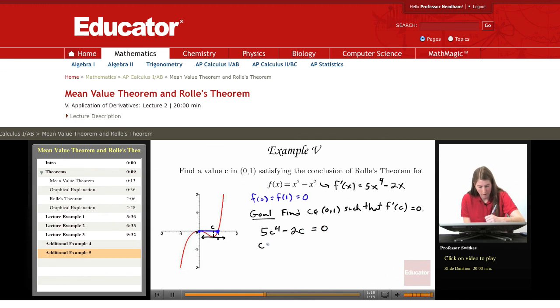Let's factor out a c. We have c times 5c cubed minus 2 equals 0, which gives us c equals 0.